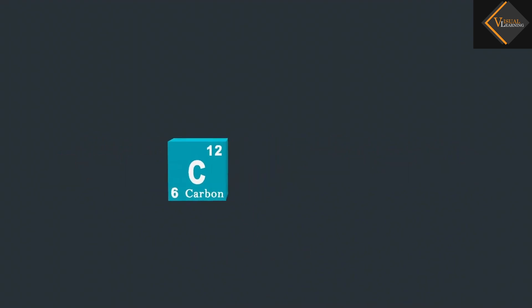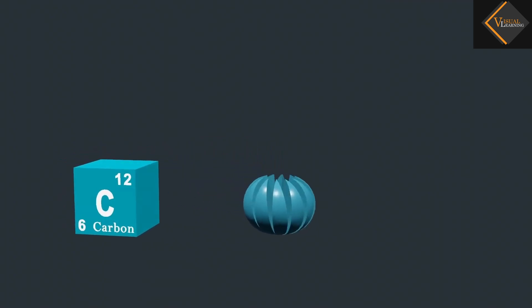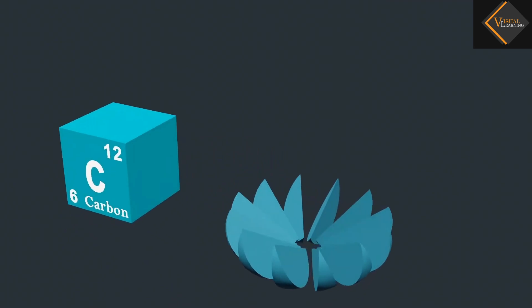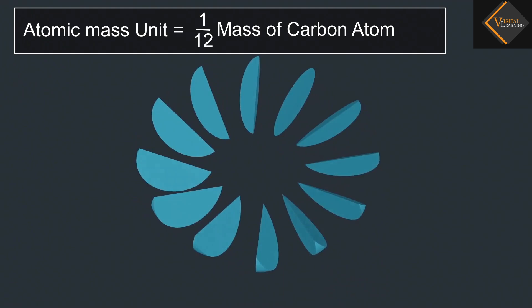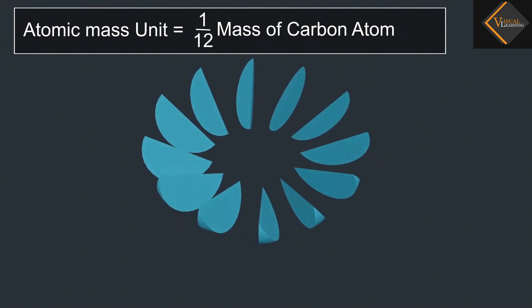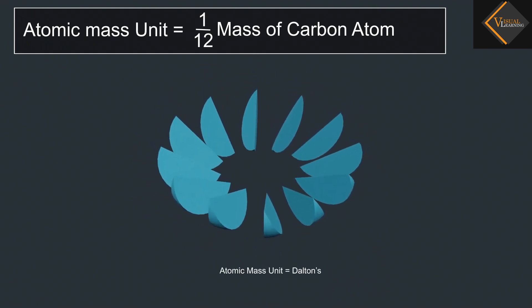Similarly, if we break down the mass of carbon into 12 equal parts, then each part will be equal to an atomic mass unit. One atomic mass unit is also called 1 Dalton.